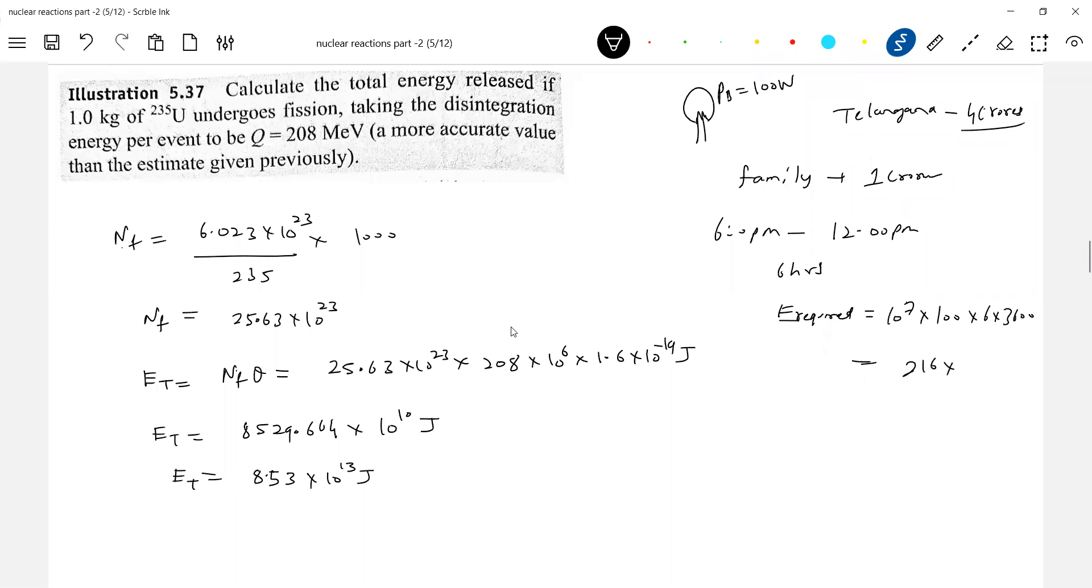So 216 into how many zeros are there? 4, 11, so 10 to the power of 11. This much energy is needed. So if I write this, 2.16 into 10 to the power of 13 joules. Oh okay, see here. 1 kg of uranium.